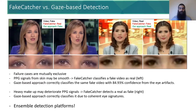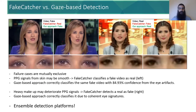Finally, we compare our approach with FakeCatcher, observing that the failure cases are mostly mutually exclusive. We correctly classify a fake video on the left and a real video on the right, whereas FakeCatcher fails in both due to physical or dynamic corruption on the skin. We propose an ensemble detection platform where such detection algorithms can be cascaded to complement each other.